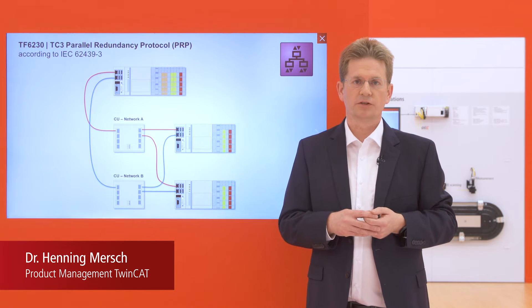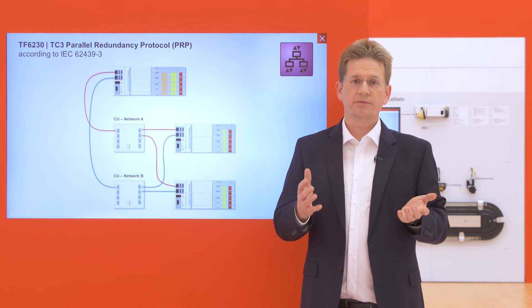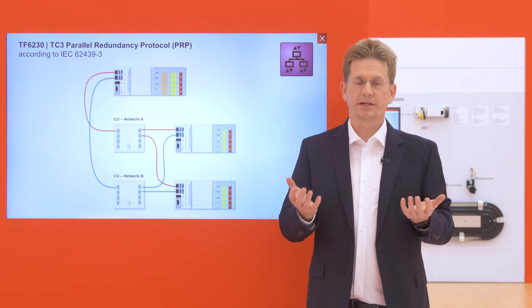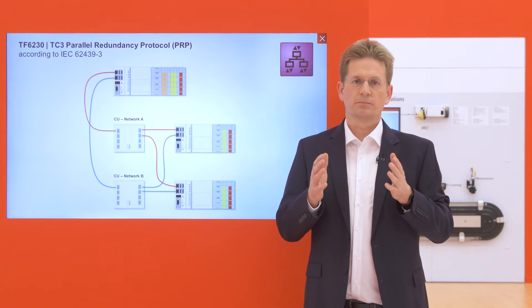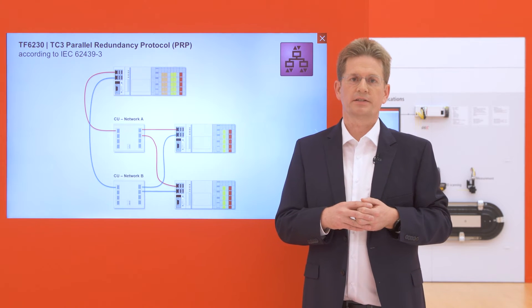TwinCAT PRP provides a software implementation to communicate via a PRP-enabled network. That is a network built out of normal network components, nothing special, but independently from each other. So the traffic goes via both networks from the sender to the recipient and is analyzed there. The TwinCAT system provides a transparent interface for user mode applications, so you don't recognize if it's actually a PRP-enabled network or not.